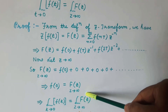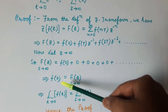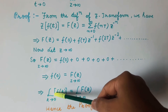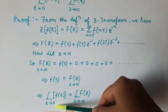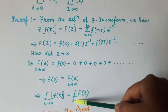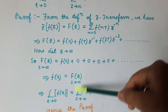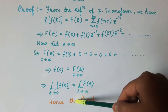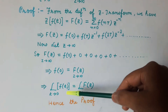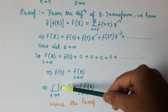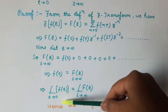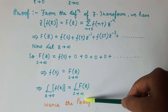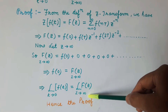So we get f(0) is equal to F(z) when z tends to infinity. We can write f(0) as the limit of f(t) when t tends to 0, which equals the limit of F(z) when z tends to infinity. So we have proved that the limit of f(t) as t tends to 0 equals the limit of F(z) as z tends to infinity. This is the initial value theorem.